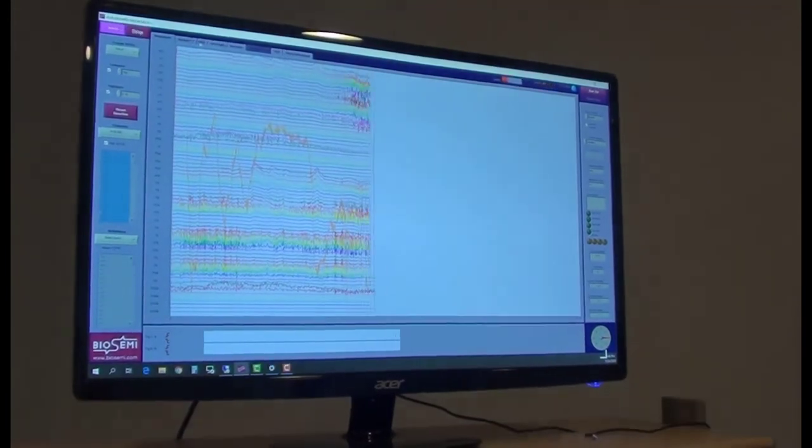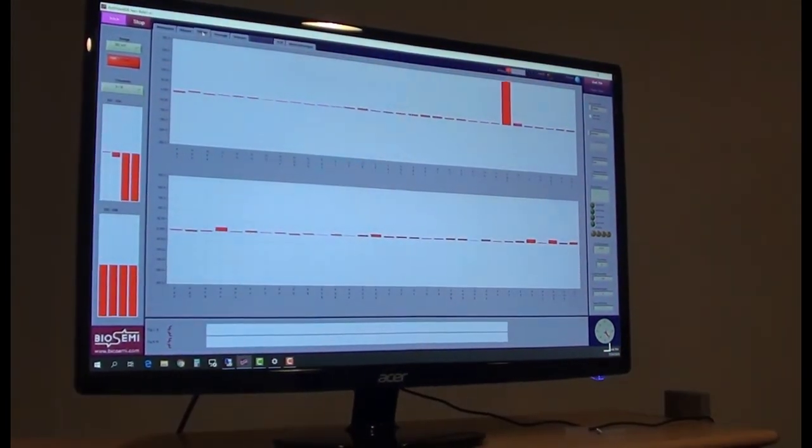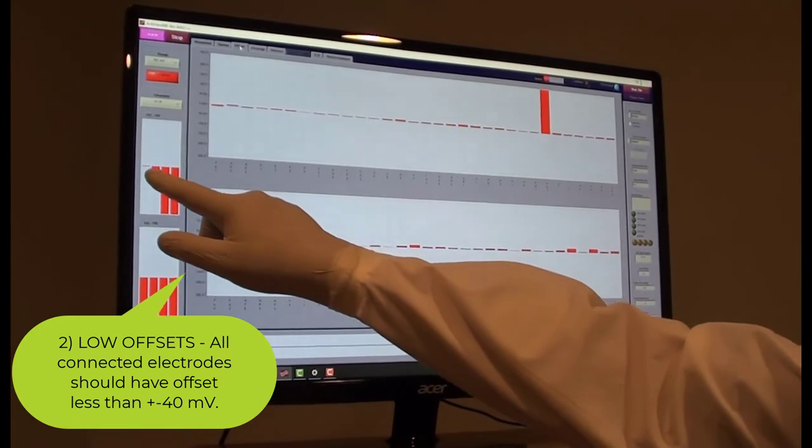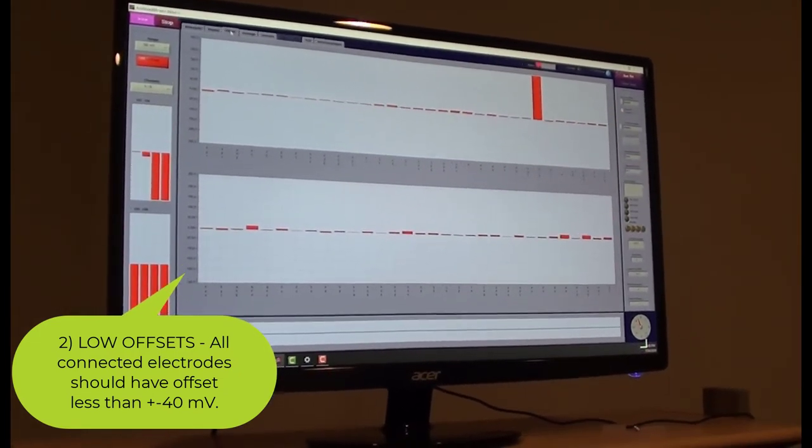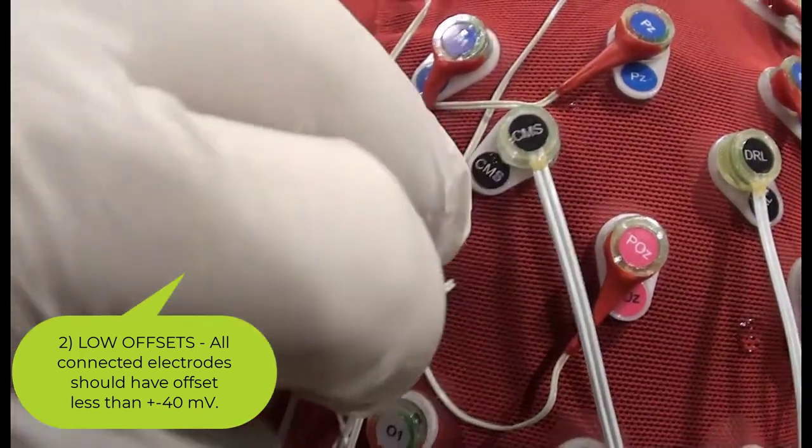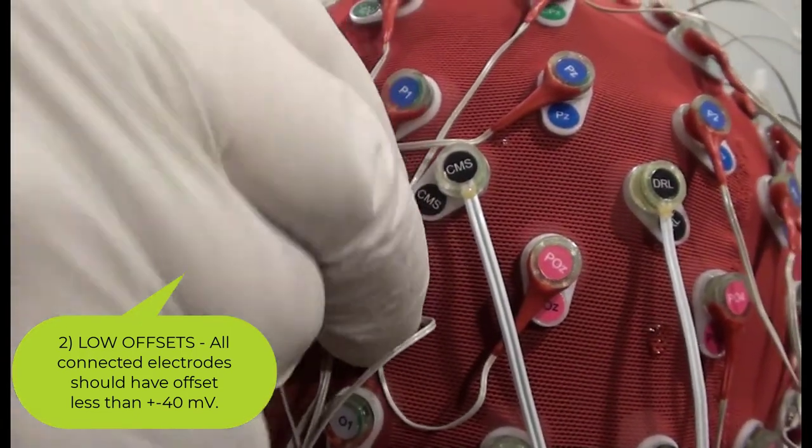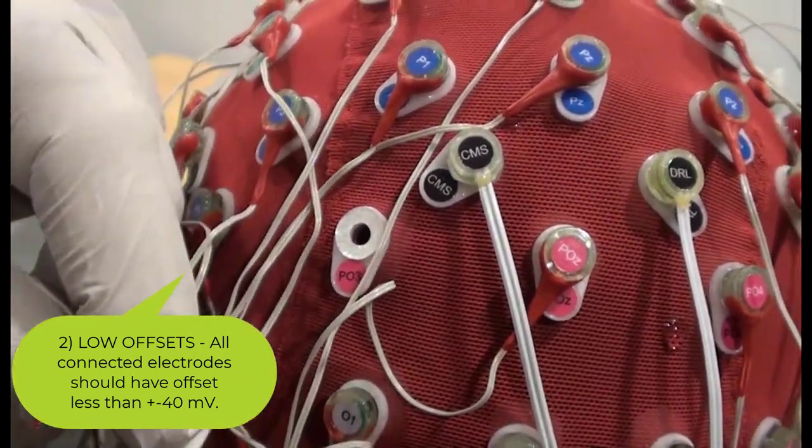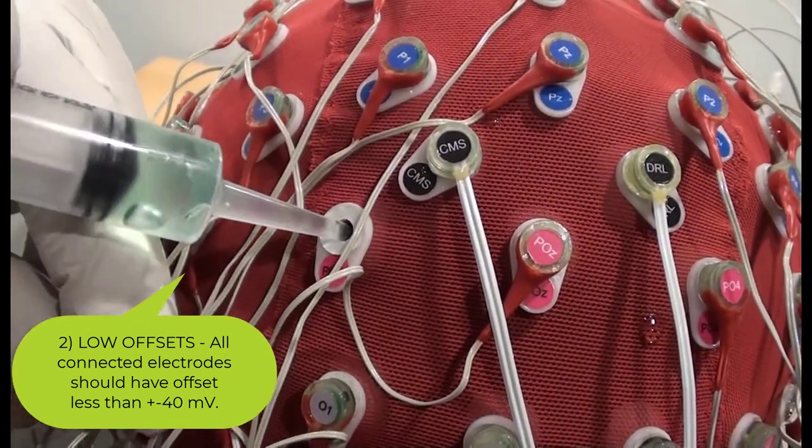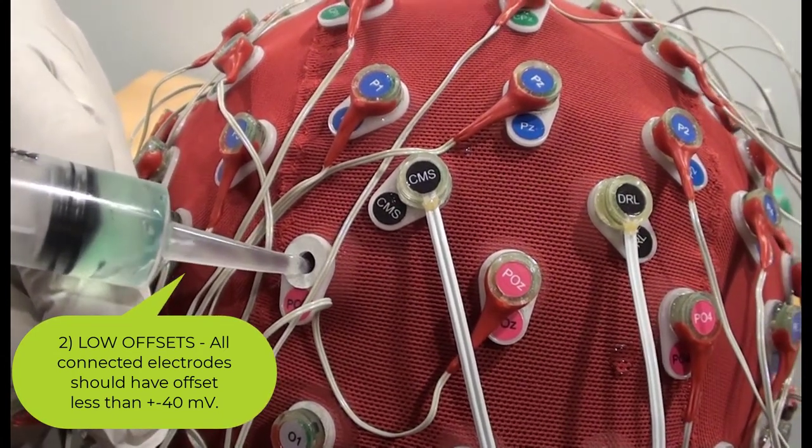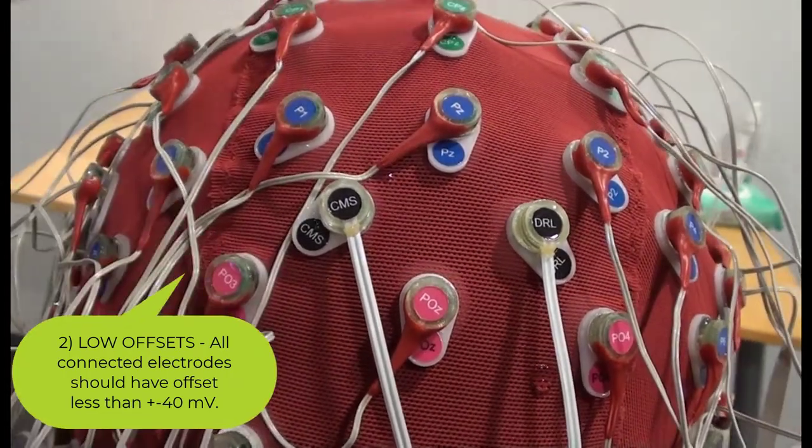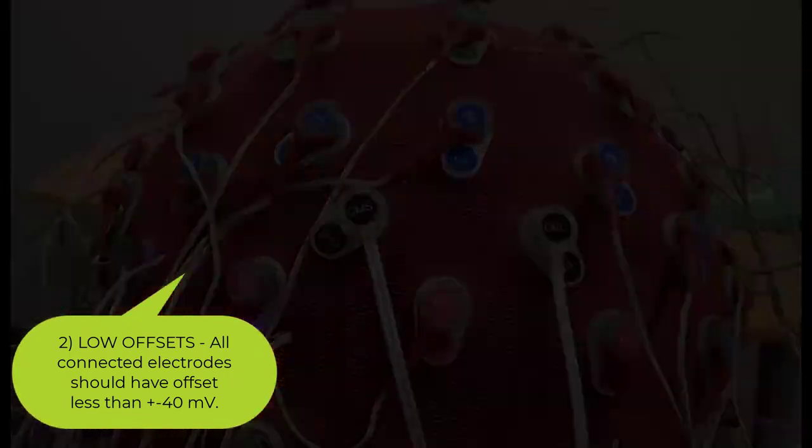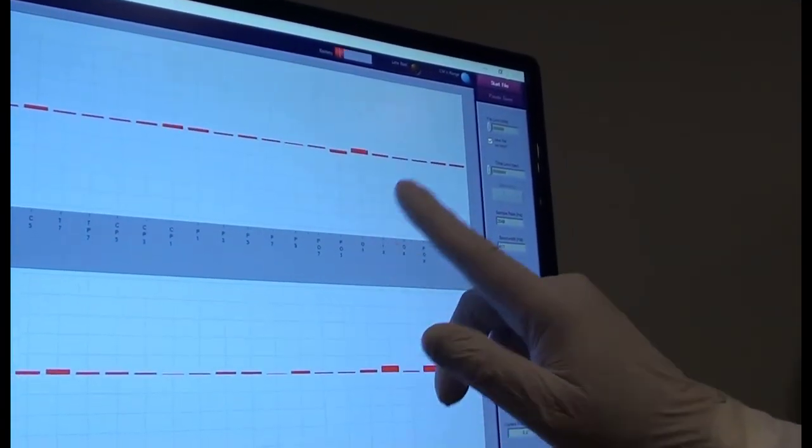With all the electrodes plugged in, you can start the ActiveView software and check the electrode contacts. After opening ActiveView, click Start at the top left to start viewing the incoming signals. Click on Electrode Offsets, the third tab from the left on the top of the screen. On the Electrode Offsets tab, look for electrodes with offset greater than 40 millivolts. Note the channel labels of any out-of-range electrode contacts and go back to the head cap and remove each of these electrodes. Part the hair with the syringe tip and inject more gel. Reinsert the electrodes and check each contact as you go.